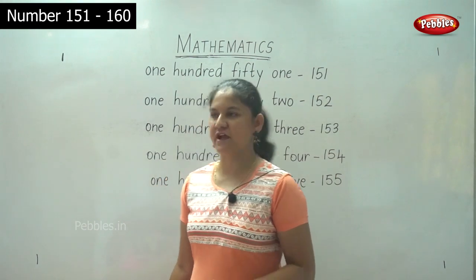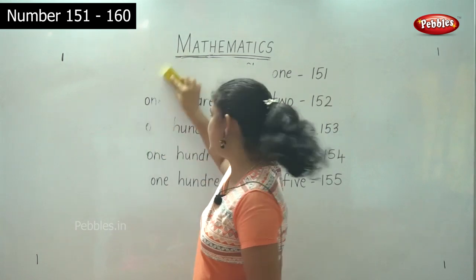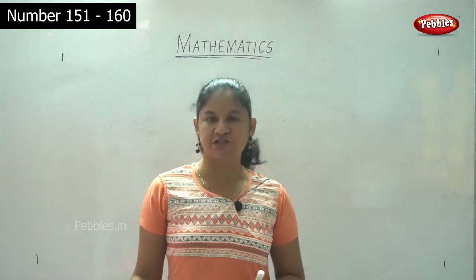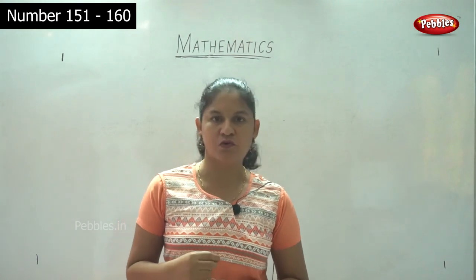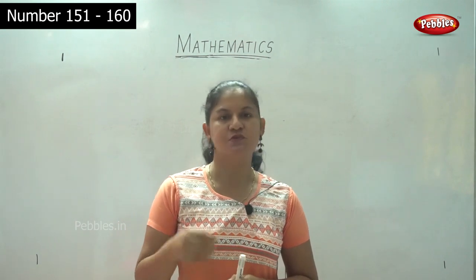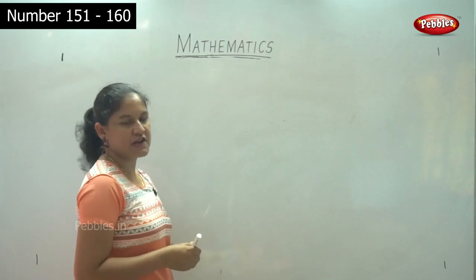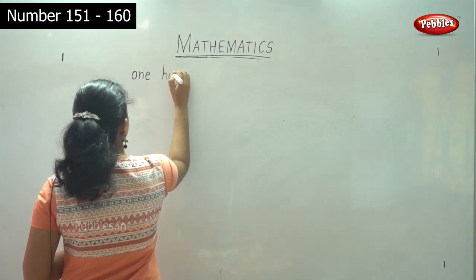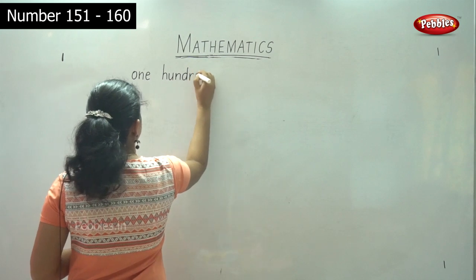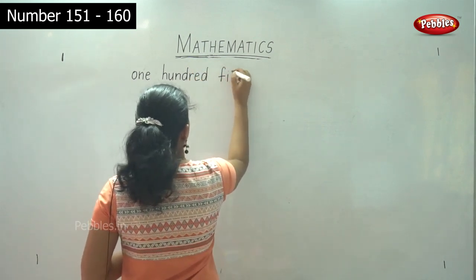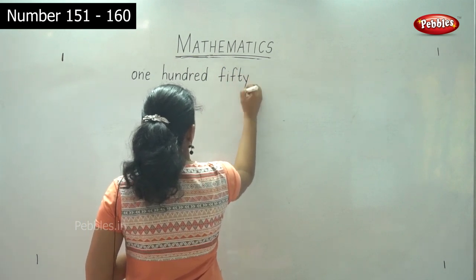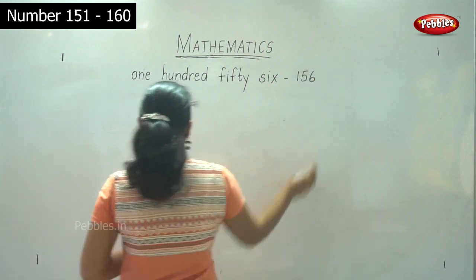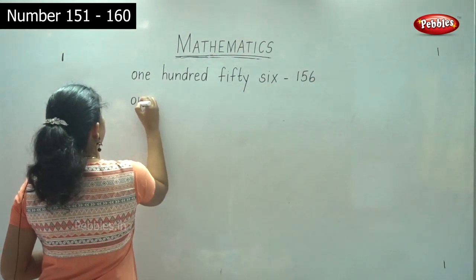So next we will move on to the next 5 numbers, that is 156 to 160. So anything that you write is equal to studying orally, so whenever you are learning something you need to keep writing it as well. O-N-E H-U-N-D-R-E-D F-I-F-T-Y S-I-X — 156.